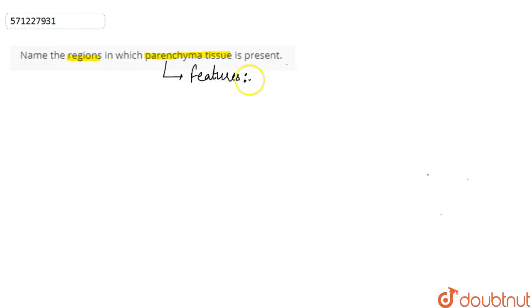The very first feature that we get to see in parenchyma tissue is that it's a simple permanent tissue, as in it consists of simple cells. The cellular structure of the parenchyma tissue is very simple.